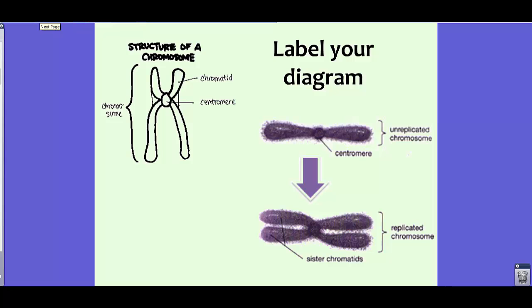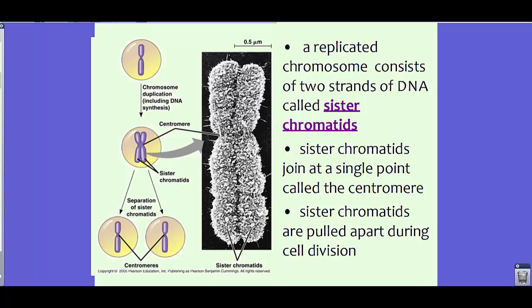A replicated chromosome consists of two strands of DNA called sister chromatids. These chromatids join at a central point called a centromere. In the actual picture of a chromosome you won't be able to see the centromere clearly — just know this is the point where they come together, almost glued. During cell division they are pulled apart, as you can see in this diagram.